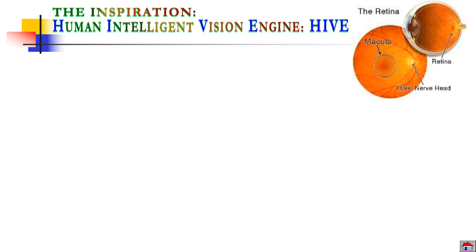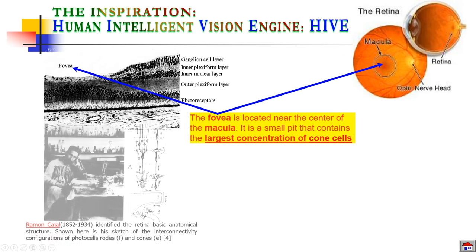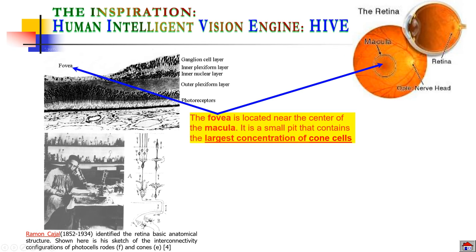Starting with biology, the retina is the sensing device of our eyes. At the center of the retina is the macula, and at the center of that is the fovea — basically a small pit that contains the largest concentrations of cones. Scientist Ramon Cajal, working from the mid-19th to 20th century, found two types of photocells. Cones, seen at the top, are responsible for color sensing, with a one-to-one connection with neurons called ganglions. These ganglions are part of the retina — the first part of the brain is actually at your eye itself.